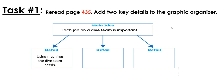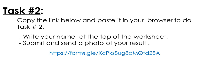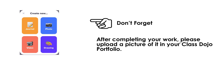For task number one, you need to re-read page 435 and add two key details to the graphic organizer. The main idea is that each job on a dive team is important. One detail is already given: using the machines the dive team needs. Give two more details about the jobs in the team. For task number two, copy the link in your browser, write your name at the top of the worksheet, and submit it. Don't forget to upload a picture of your completed work in your Class Dojo portfolio. Bye bye!